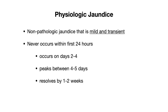Physiologic jaundice is non-pathologic jaundice that is mild and transient, and it occurs in a majority of newborns. When examining a newborn, the goal is to differentiate physiologic jaundice from something pathologic, and there are some markers to help you do that. Physiologic jaundice never occurs within the first 24 hours — that is a sign of pathologic jaundice. Physiologic jaundice typically occurs on days two to four, peaks within four to five days, and resolves by one to two weeks.